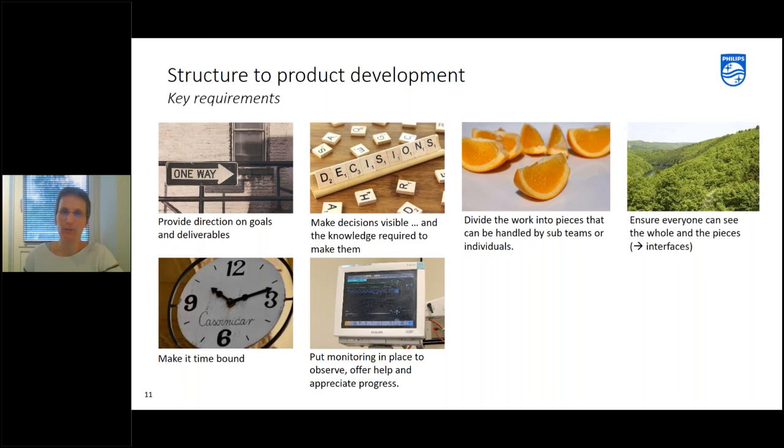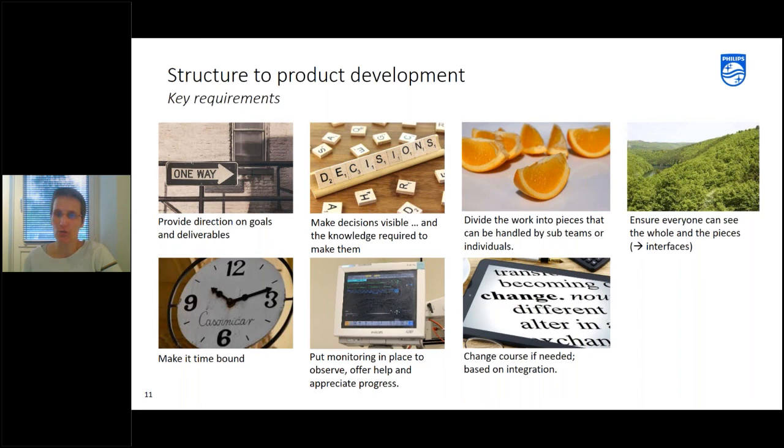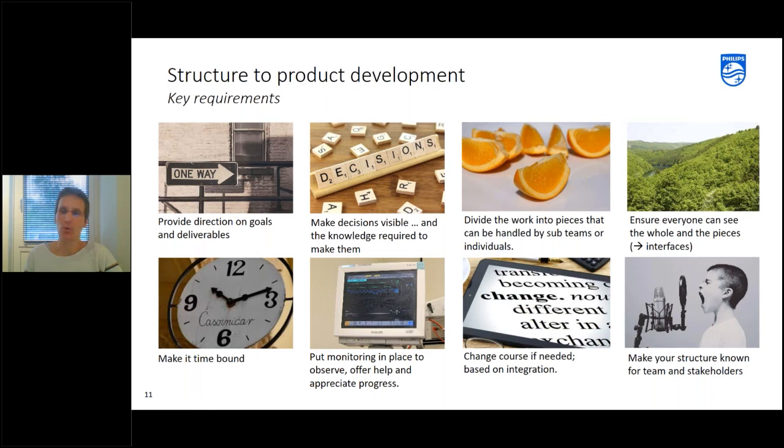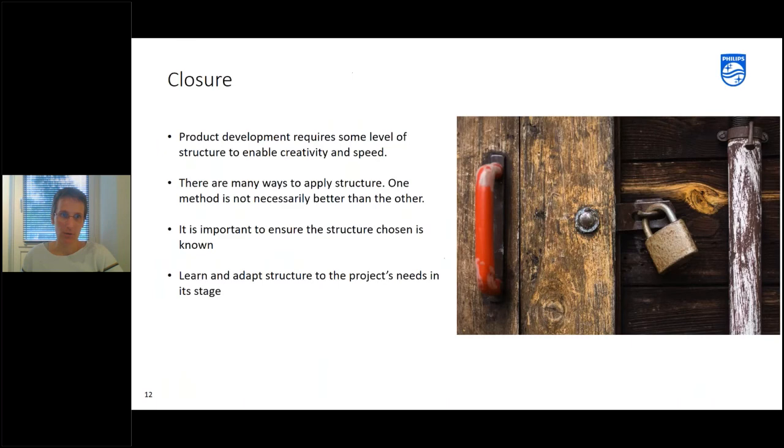So it's important that we are interested in the results because when someone is waiting for the results people will go faster. Then what we also always need to do is change course if needed and we need to do that based on integration. So we need to see the whole, connect all the dots and then see how do we need to change course. It could mean that we need to put in place another structure or slightly adapted structure. And then the last point, very important, is make your structure known. So make it visible for people. What is the way you organize your project? It should be clear for the team so that they can see everything and they can work with it. But it also needs to be clear for stakeholders. When can they expect certain decisions and so on.